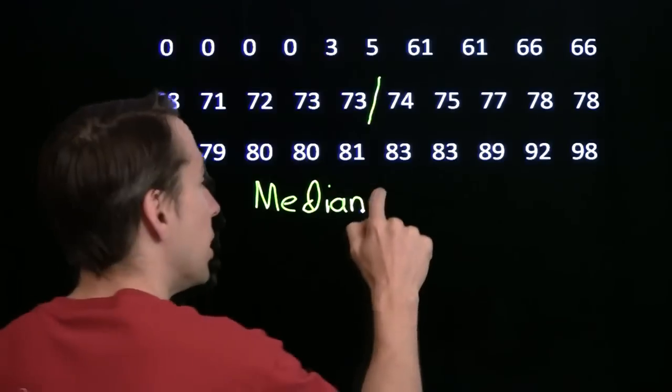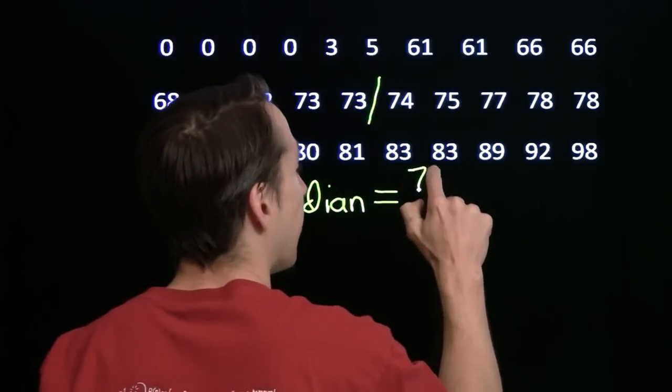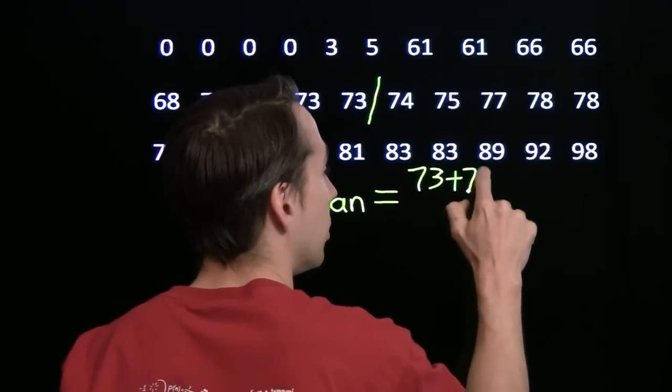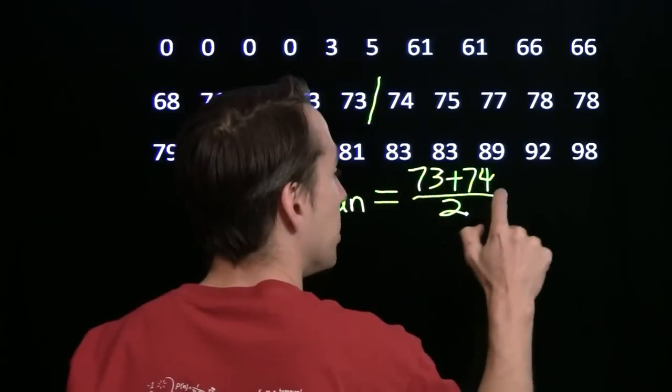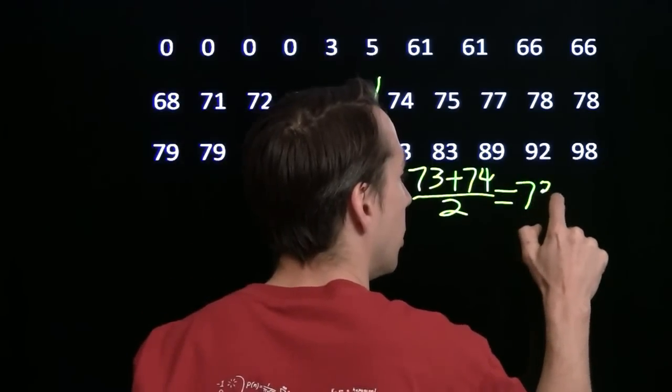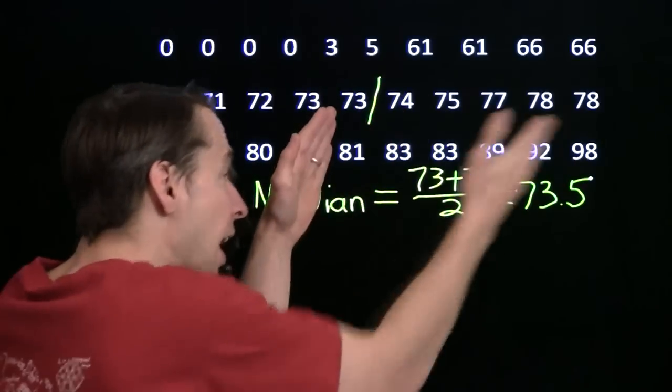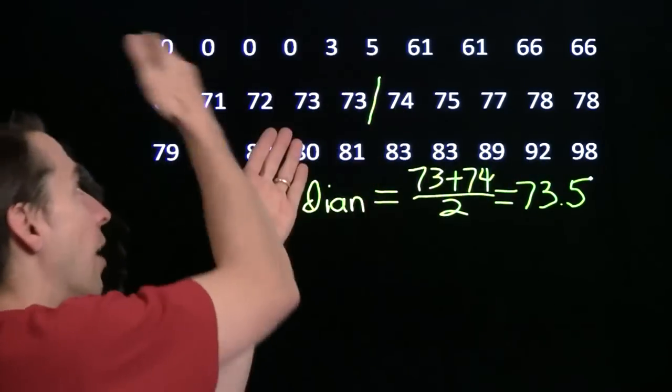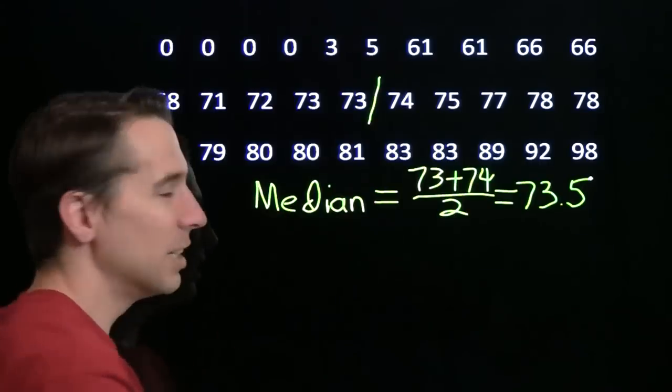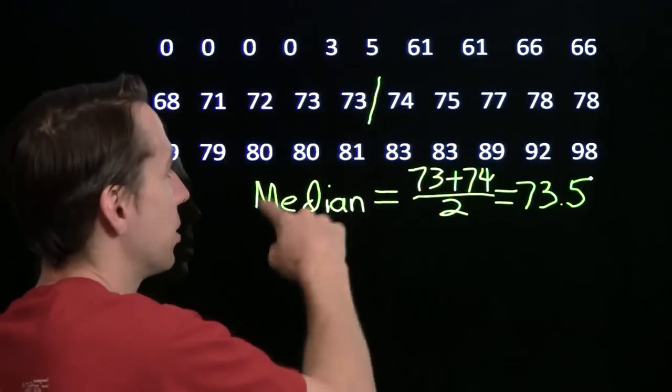When we have an even number of numbers, it's the average of the middle two. So the number that's right between the middle two, and that's 73 and a half. And exactly half of these numbers are higher than that, half of them are lower than that. The median is right in the middle when we list them.